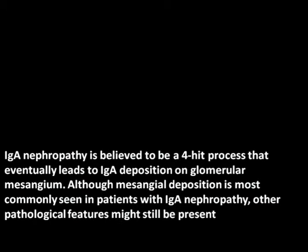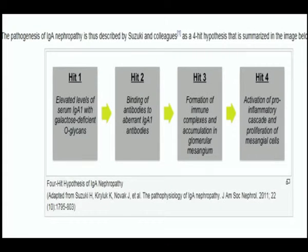IgA nephropathy is believed to be a 4-hit process that eventually leads to IgA deposition on the glomerular mesangium. Although mesangial deposition is most commonly seen, other pathological features are still present. This 4-hit hypothesis, published in the American Journal of the Society of Nephrology in 2011, describes the pathogenesis of IgA nephropathy as summarized by Suzuki and colleagues.